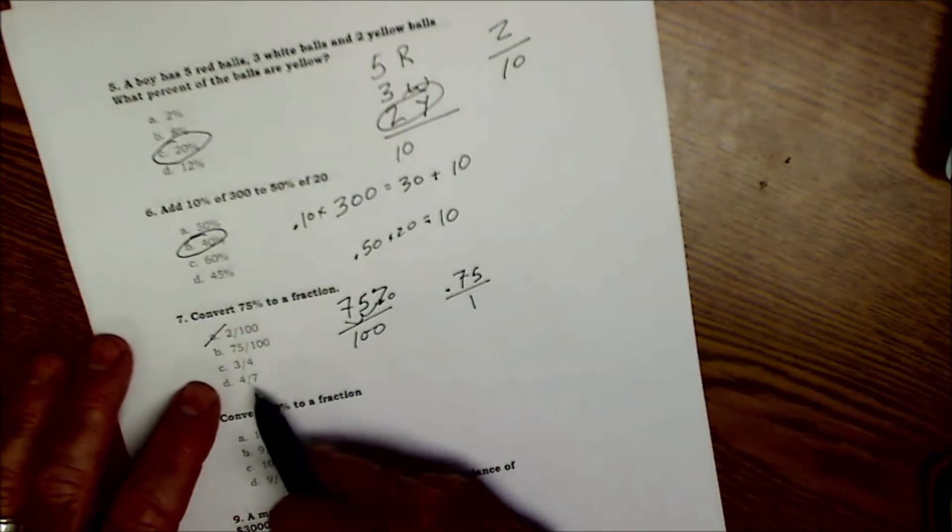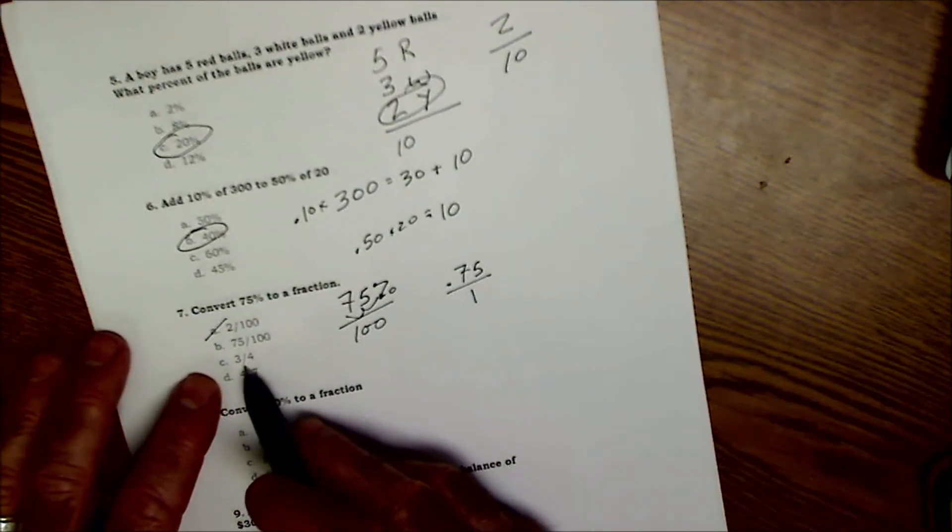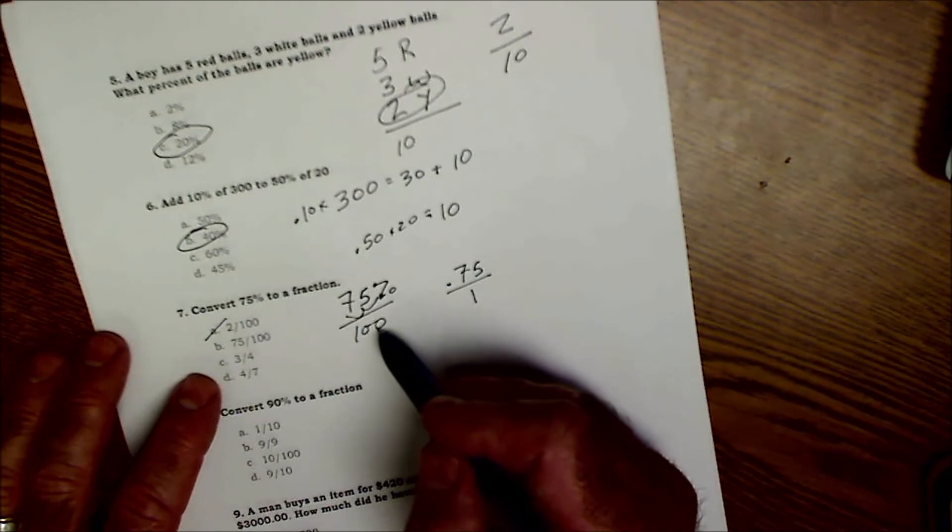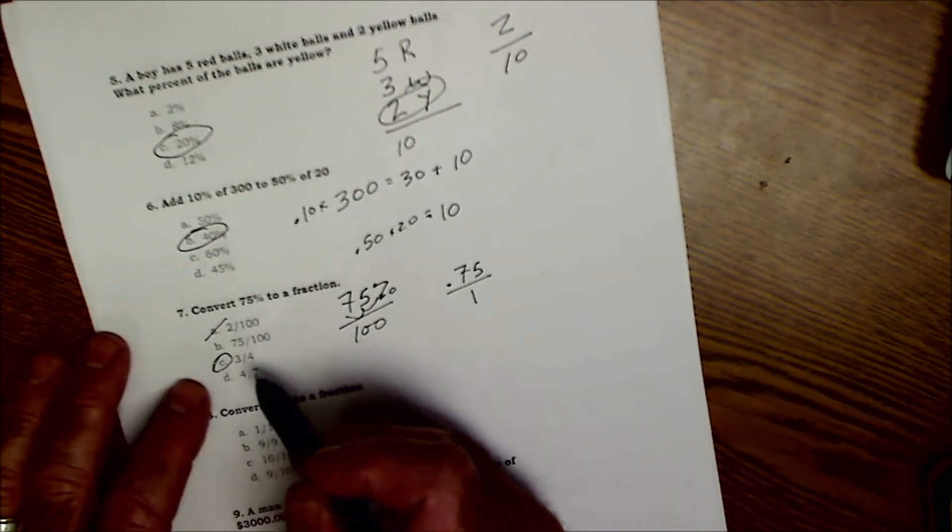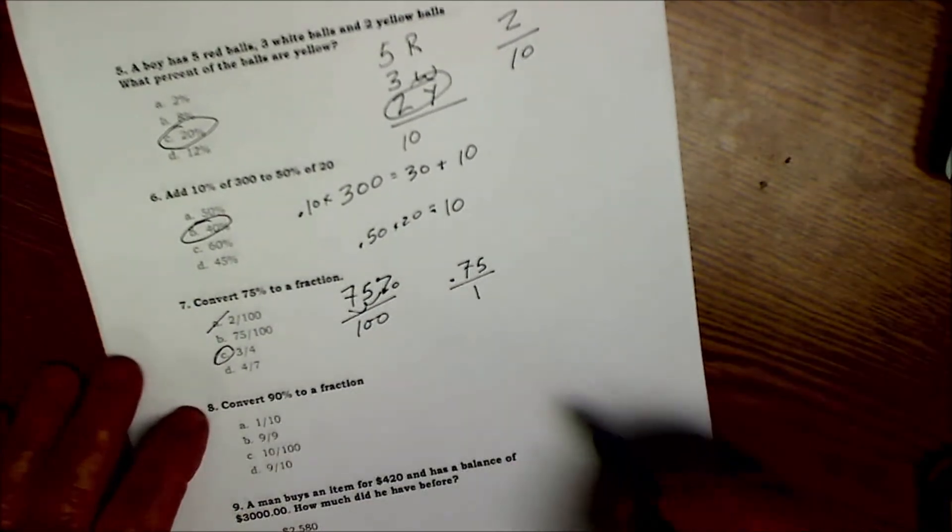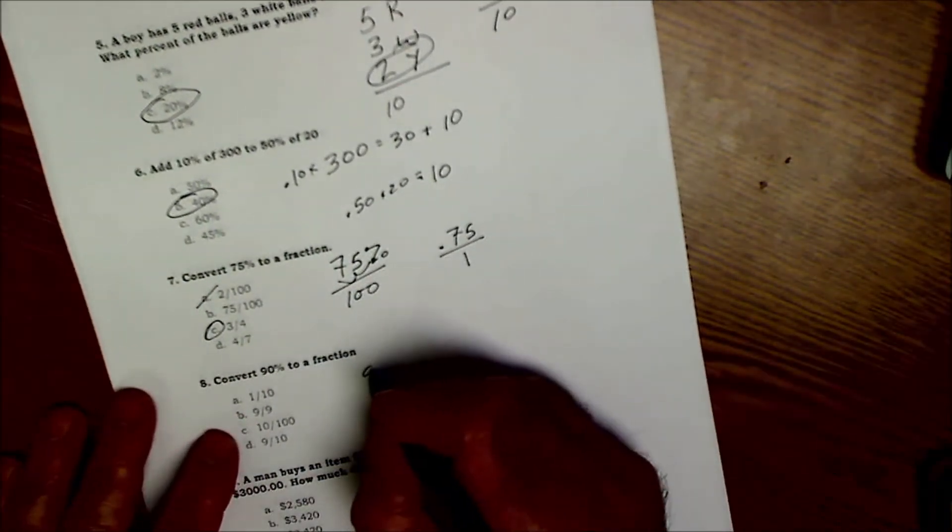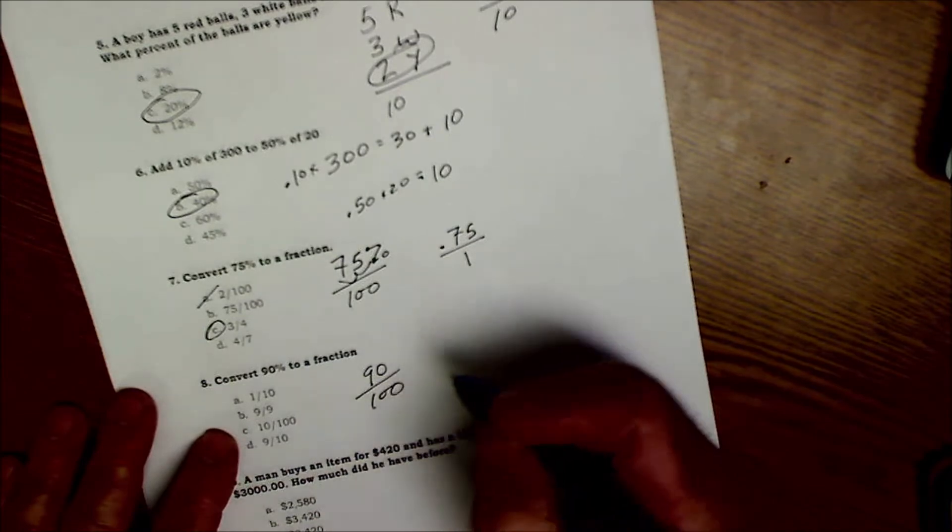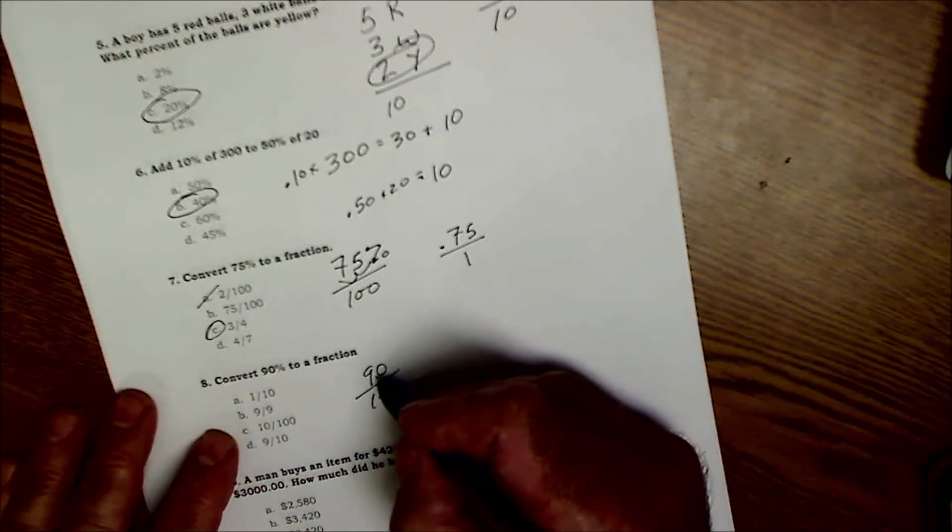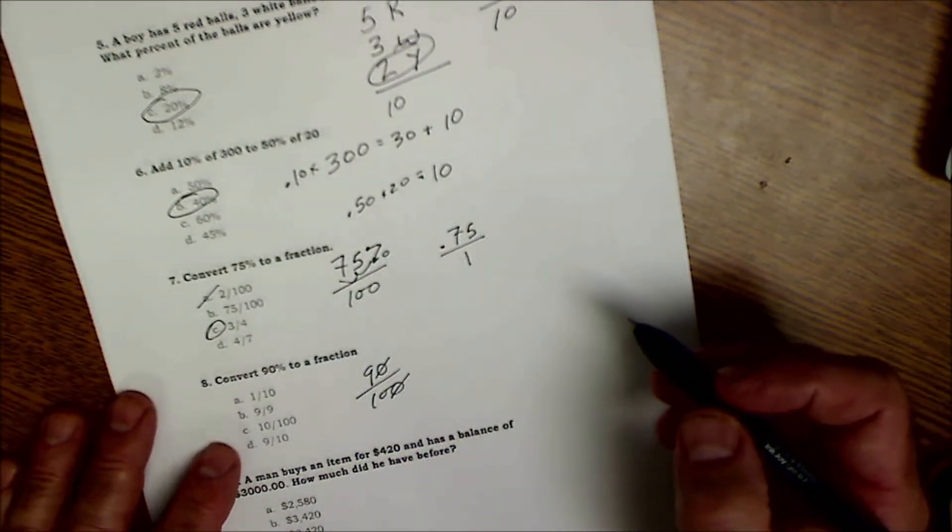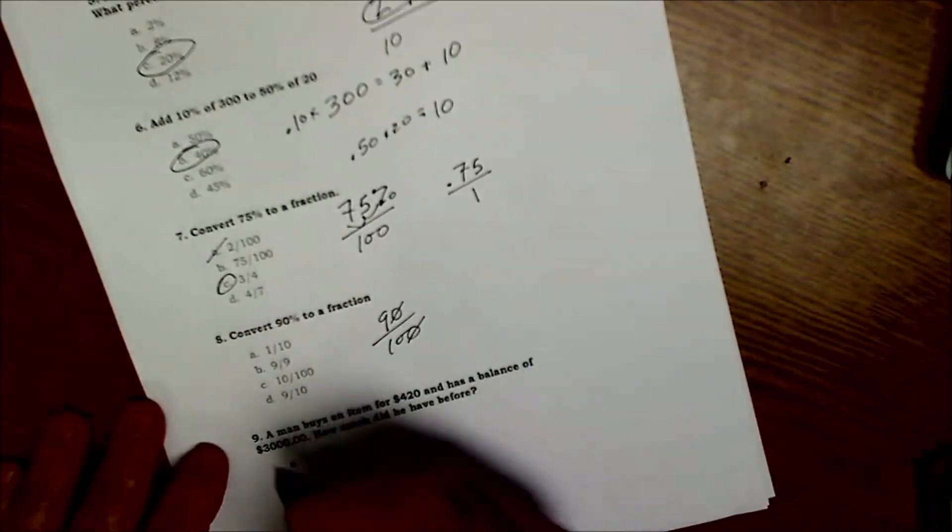Convert 90% to a fraction. That's 90 out of 100, or 9 out of 10, and that's right down here on answer D.